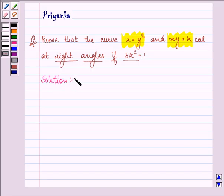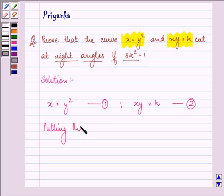Here we are given two equations: x is equal to y squared and xy is equal to k. Let this be the first equation and this be the second equation.